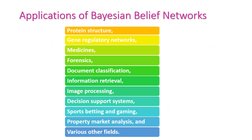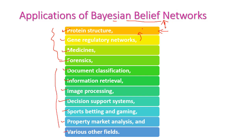Now let us see the applications of Bayesian belief network. It is a very powerful problem-solving technique for complex problems, and it can solve many real-time problems. The first application is protein structure — it is used to solve genetic network-related problems and gene regulatory networks. Other applications include medicines, forensics, document classification, information retrieval, image processing, decision support systems, sports betting and gaming, property market analysis, and various other fields.